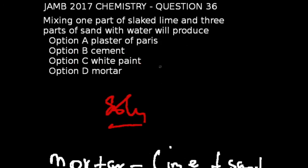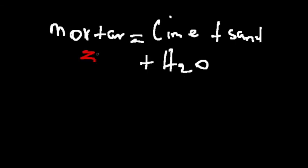Question 36 of the JAMB 2017 chemistry exams. Mixing one part of slaked lime and three parts of sand with water will produce. Correct answer to this question is option D, which is mortar. Look at this, mortar simply comprises or comprises of lime, sand, and water.